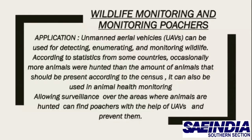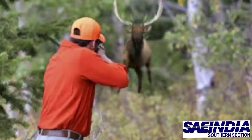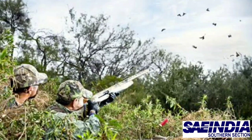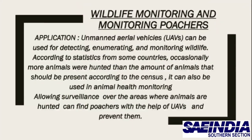For wildlife monitoring and monitoring poachers, UAVs can be used for detecting, enumerating, and monitoring wildlife. According to statistics from some countries, occasionally more animals were hunted than the amount present according to the census. UAVs can also be used in animal health monitoring, allowing surveillance over areas where animals are hunted, and can find poachers with the help of UAVs to prevent them.